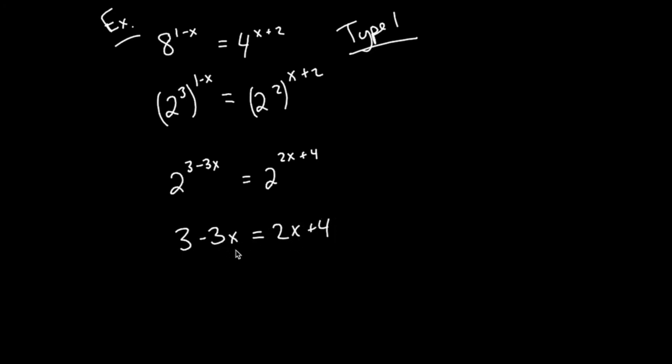I'm going to subtract 2x from both sides and subtract 3 from both sides to bring all my variable terms on the left and all my constant terms on the right. So I have a negative 5x, and then subtracting 3 is equal to 1. Divided both sides by negative 5, I get x is negative 1 fifth.